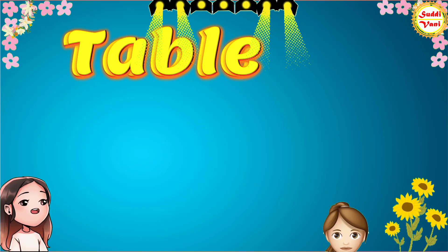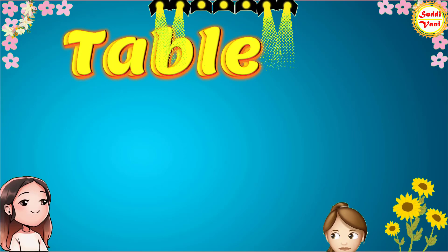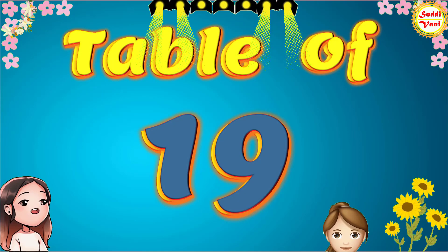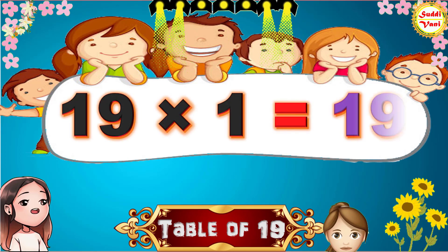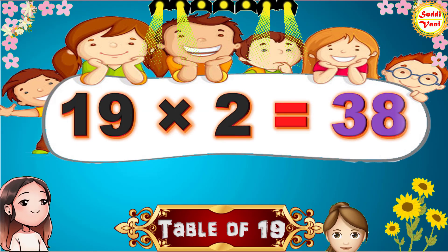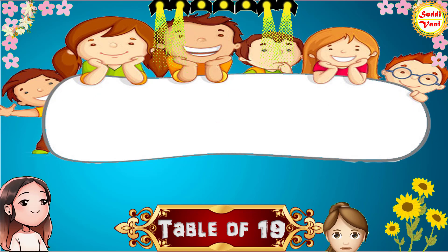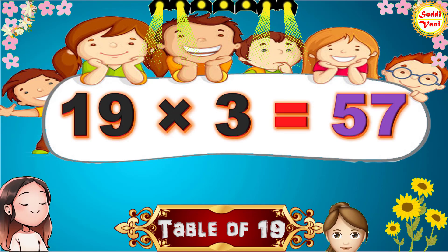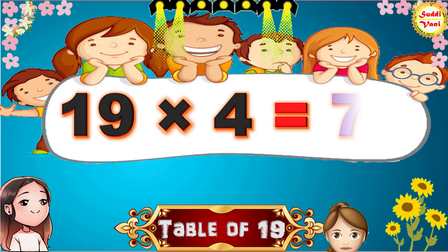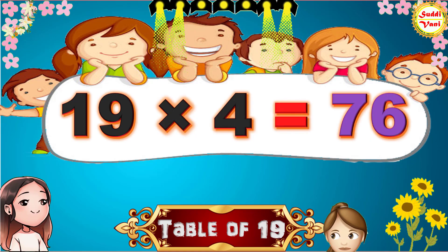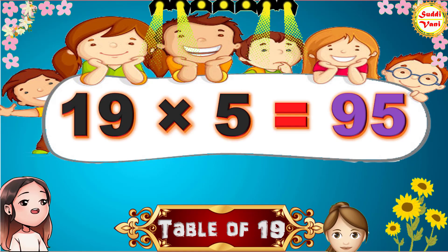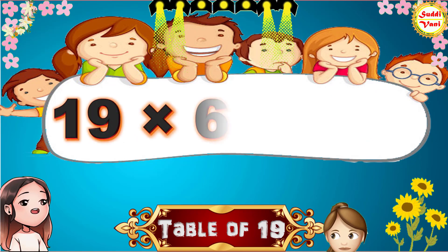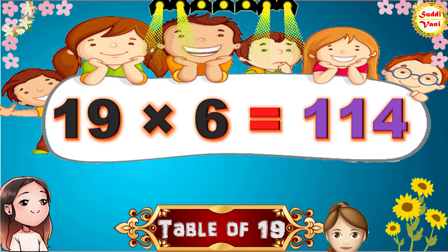Hello children, we will learn the table of 19. 19 × 1 = 19, 19 × 2 = 38, 19 × 3 = 57, 19 × 4 = 76, 19 × 5 = 95, 19 × 6 = 114.